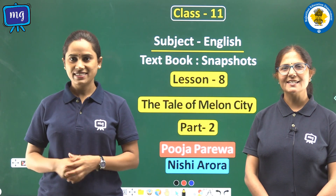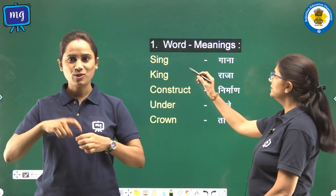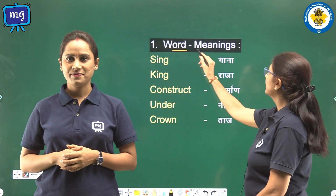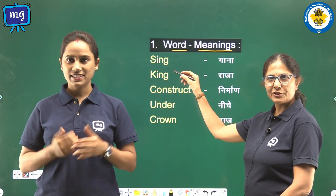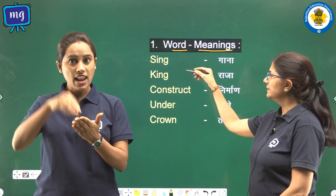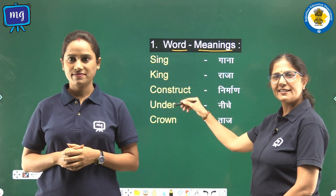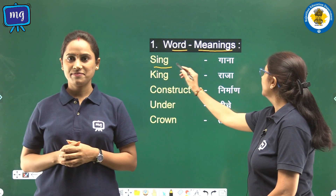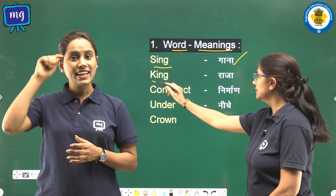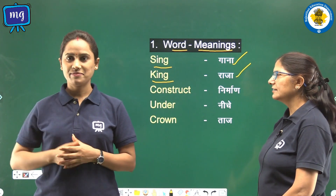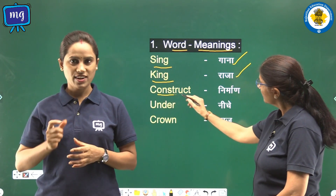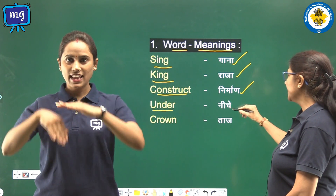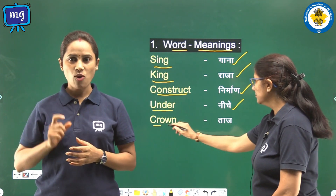Let's start. Question number 1: word meanings. In this question we shall learn the meaning of these English words in Hindi. Sing means Gana, King means Raja, Construct means Nirman, Under means Neche, Crown means Taj.